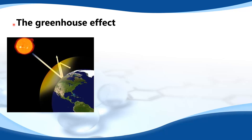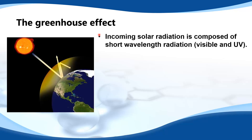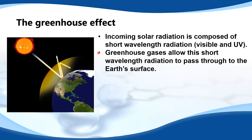In this video we'll look at the greenhouse effect. Incoming solar radiation is composed of short wavelength radiation, mainly visible light and ultraviolet radiation. Greenhouse gases allow this short wavelength radiation to pass through to the earth's surface.